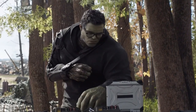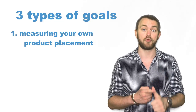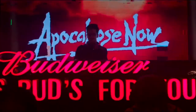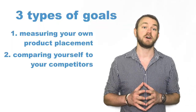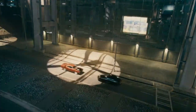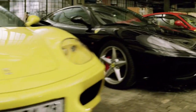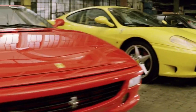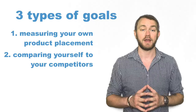But beyond costs, it's important to figure out from the start what it is you're trying to get out of your product placement measurement. Broadly speaking, there are three main goals. The most basic one is measuring your own product placement, which usually takes the form of a dollar valuation. Secondly, there's comparing yourself to your competitors — a head-to-head with your main rivals, or seven or eight of your main competitors, or all the brands in your product category.